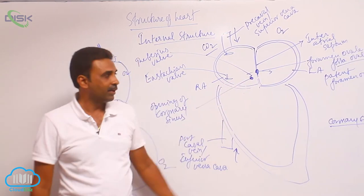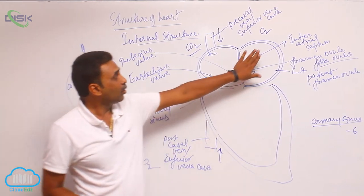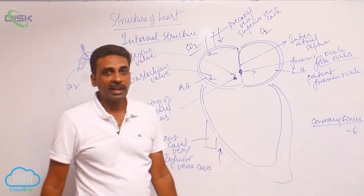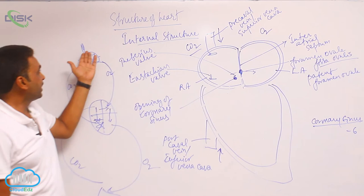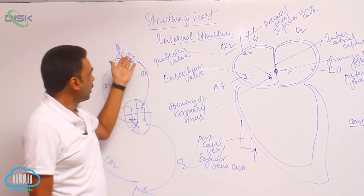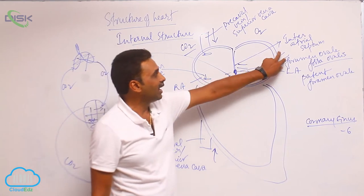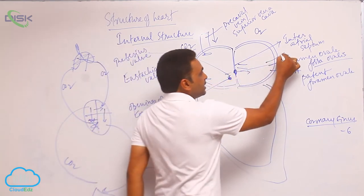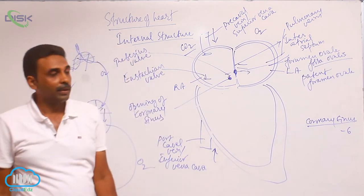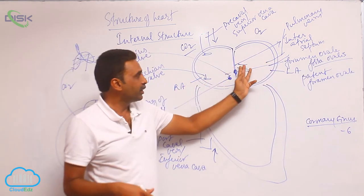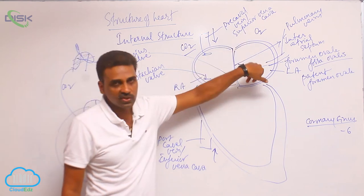The coronary sinus opening is present close to the inter-atrial septum. On the left side, the left atrium receives oxygenated blood coming from the lungs via pulmonary veins. There are two pulmonary veins on the left side and two on the right side — all four opening into the left atrium. They are not guarded by any valves and bring oxygenated blood to the left atrium.